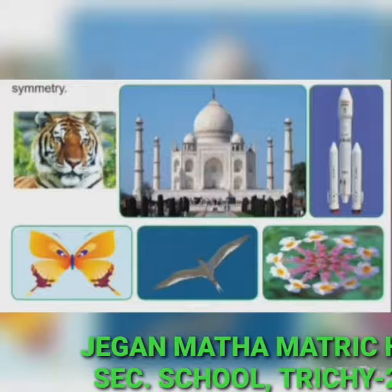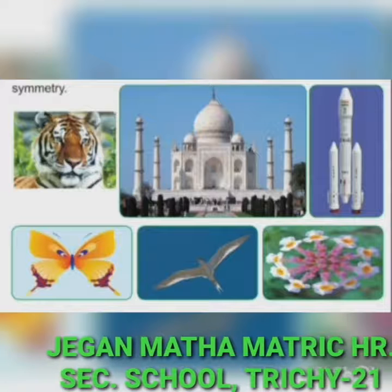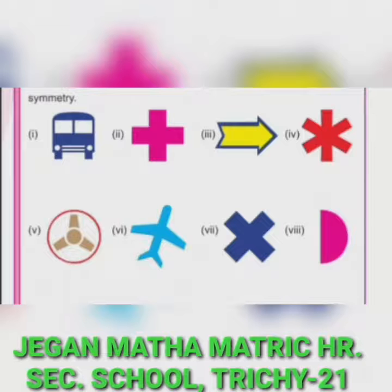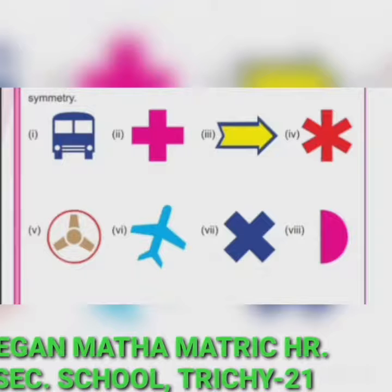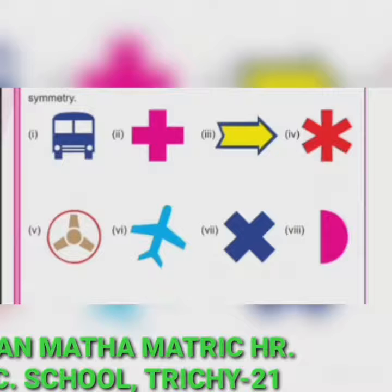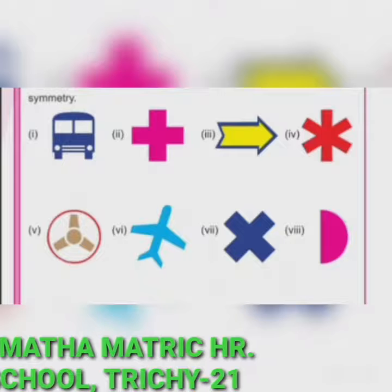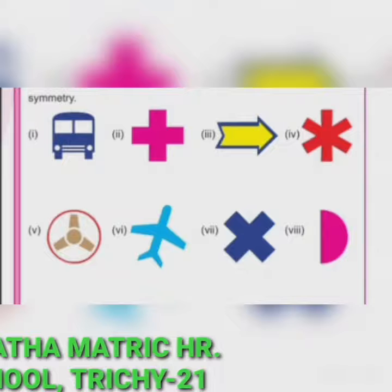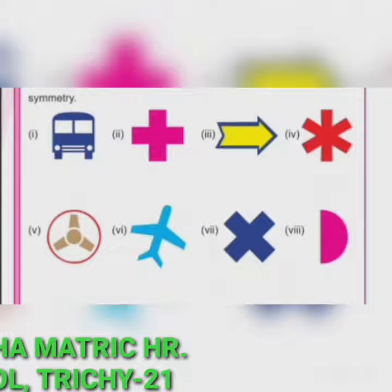Their left and right sides are mirror images of each other. Now let us see the figures with two lines of symmetry. Take a rectangular sheet and fold it lengthwise so that one half fits exactly over the other half. These two lines are the lines of symmetry.